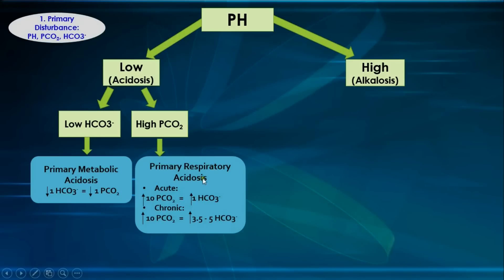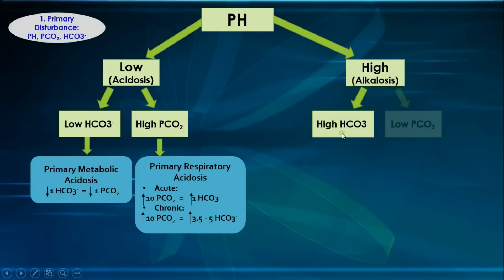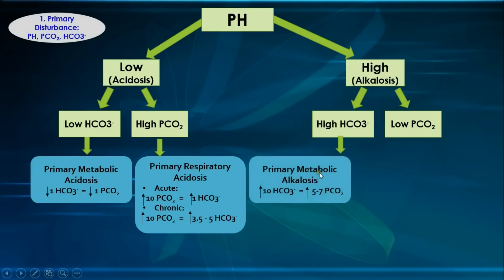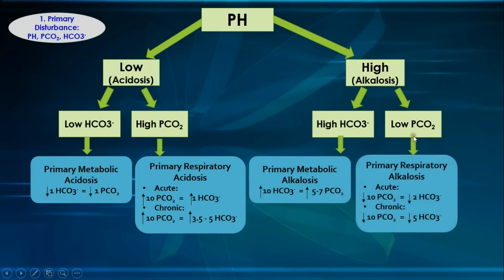The expected compensation rates are shown below. For alkalosis, you either have a high bicarbonate or a low pCO2. A high bicarbonate indicates primary metabolic alkalosis, and a low pCO2 — meaning hyperventilation — indicates primary respiratory alkalosis. Those are the expected compensation rates, which we will now explain.